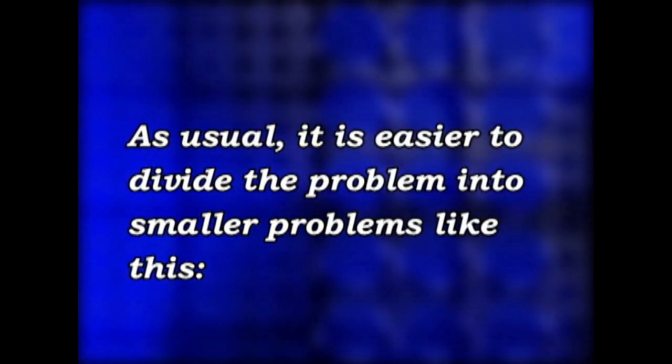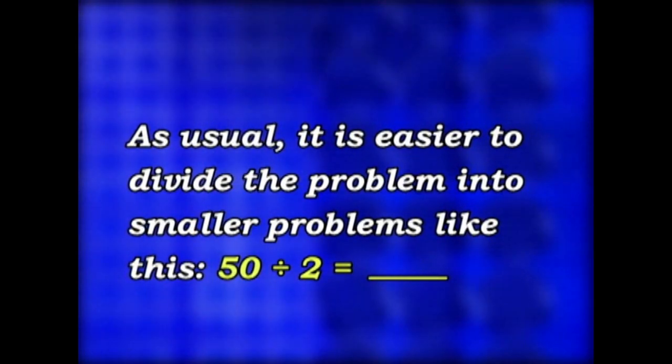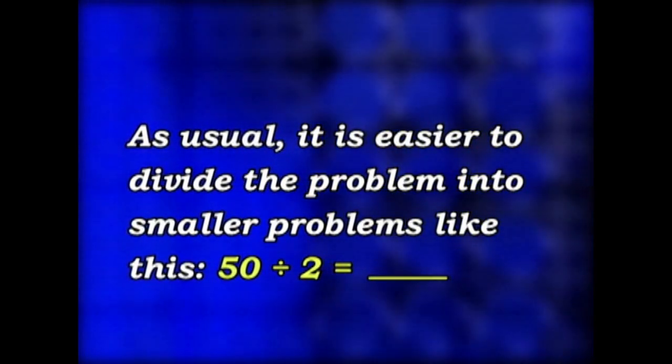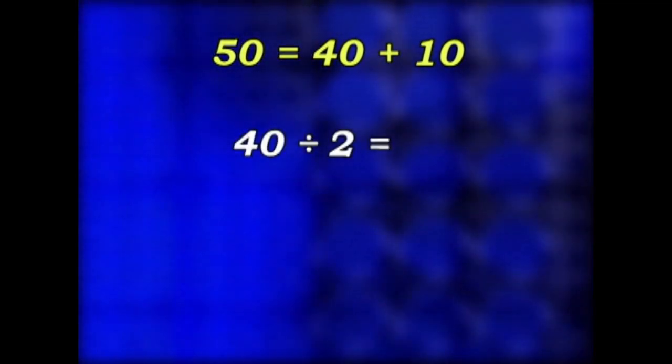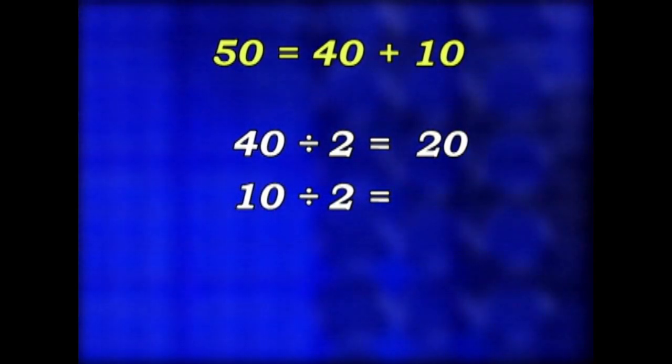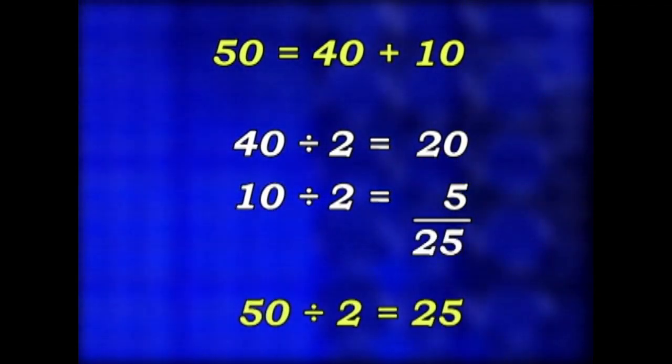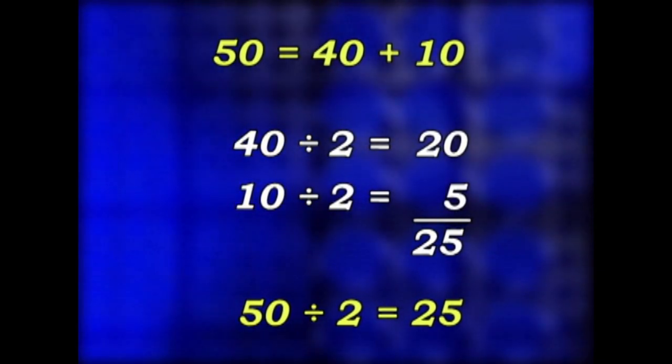But as usual, it's easier to divide the problem into smaller problems like this. Let's take 50 divided by 2. Well, 50 is the same as 40 plus 10. So if we first divide 40 by 2, we get 20. And then we divide 10 by 2, we get 5. And we add the 20 and 5 together, we get 25. So we see that 50 divided by 2 is 25.